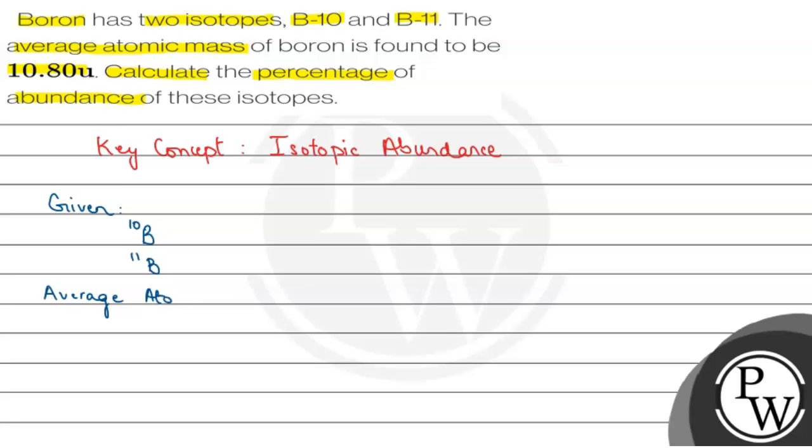So before solving this question, let us discuss an important point, which is: sum of percentage of abundance of all isotopes must be equal to hundred percent.